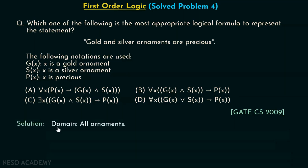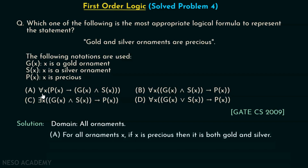Let us suppose that the domain consists of all ornaments. Let's try to convert all these logical expressions into their equivalent English sentences. For option A: for all x, P(x) implies G(x) and S(x). This means for all ornaments x, if x is precious then it is both gold and silver. This doesn't make sense — you are saying all precious ornaments are both gold and silver — which is not correct. So option A is not correct.